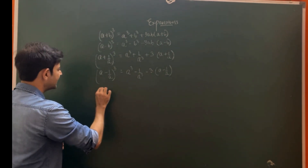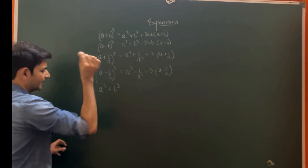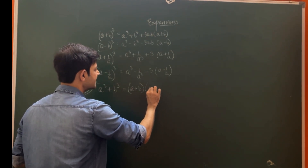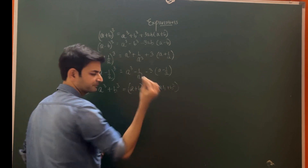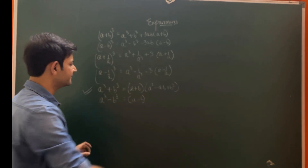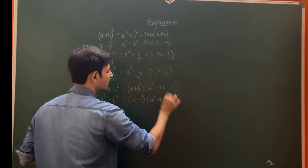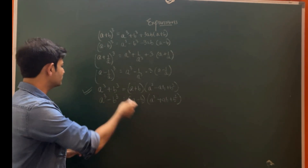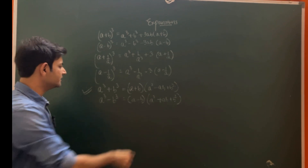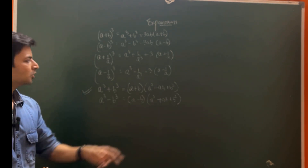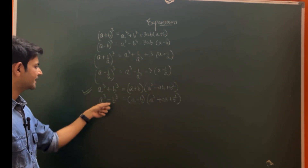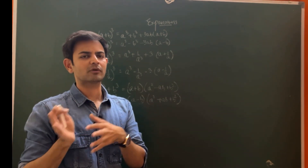Two very important cubic formulas used across multiple chapters: a³ + b³ = (a + b)(a² - ab + b²), and a³ - b³ = (a - b)(a² + ab + b²). A simple trick: if you have plus, the first bracket is plus and ab in the second bracket is minus. If you have minus, the first bracket is minus and everything in the second bracket is positive.